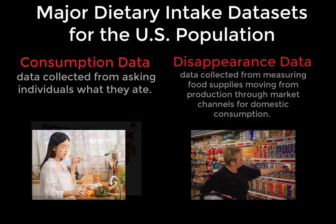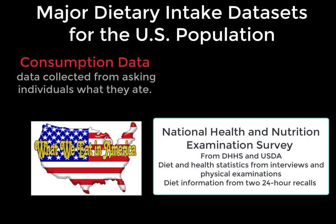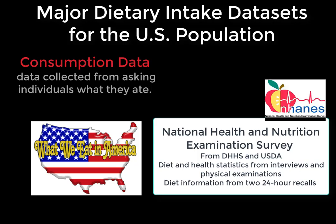The most common consumption data set available for measuring dietary intake of the U.S. population is titled What We Eat in America. This data set comes from a survey conducted in partnership between the U.S. Department of Agriculture and the U.S. Department of Health and Human Services. It is the National Health and Nutrition Examination Survey, or more commonly called NHANES. NHANES is considered the cornerstone for national nutrition monitoring to inform nutrition and health policy.